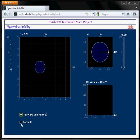If you want to know the formula for the amplification factor, you can click this radio button down here, and you find that G is equal to 1 plus Z. Z here is lambda delta T, and this is exactly what our analysis showed before.